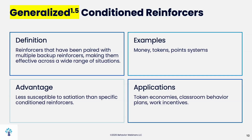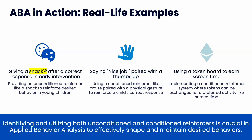We pair neutral stimuli that mean nothing with reinforcers. All tokens are generalized conditioned reinforcers — completely neutral at first, then paired with something the person actually likes. Generalized conditioned reinforcers are paired with multiple backup reinforcers, making them effective across a wide range of situations and less susceptible to satiation. Examples include money, token systems, and point systems used in token economies, classroom behavior plans, and work incentives.